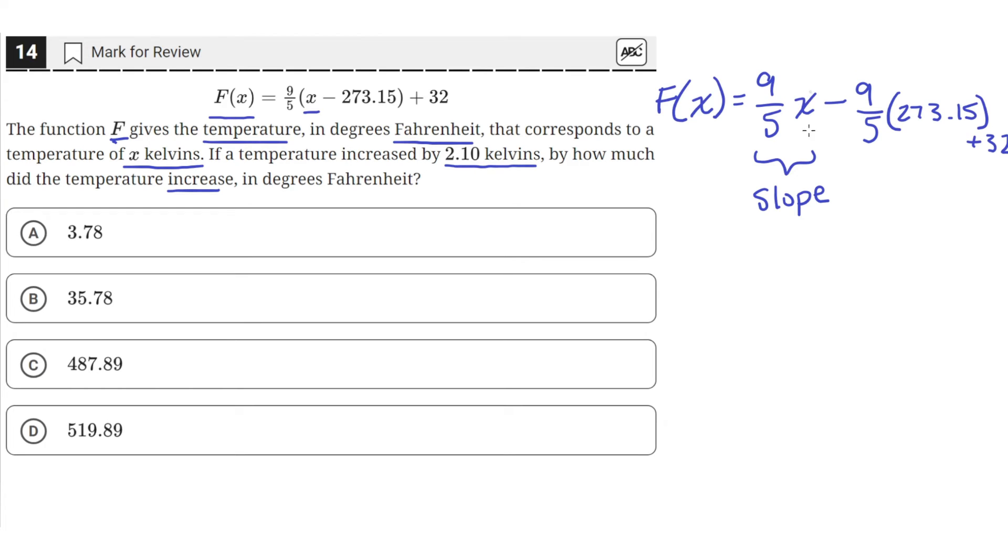So when we increase x by 1, the value of F of x increases by 9 over 5. So in this case, if we're increasing x by 2.1 kelvins, then that means the value of F of x would just increase by 9 over 5 times 2.1. So this would be the change in F of x after a 2.1 increase in x.